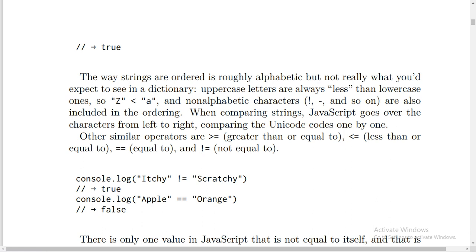Uppercase letters are always less than lowercase ones, so Z < a. Non-alphabetic characters and the minus symbol and so on are also included in the ordering. When comparing strings, JavaScript goes over the characters from left to right, comparing the Unicode codes one by one.